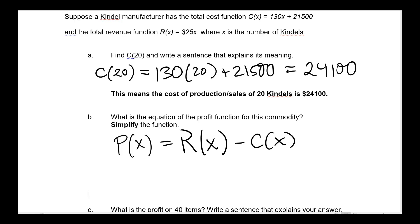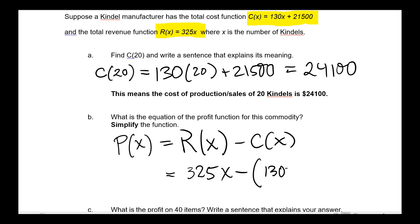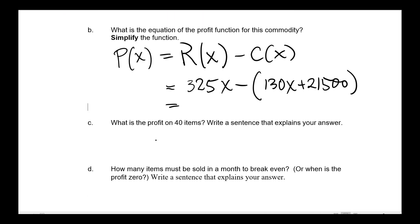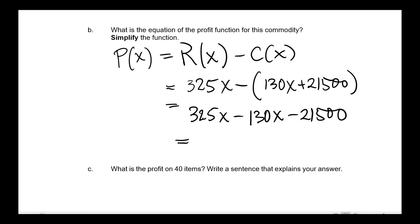So in this case, we take the revenue and subtract the cost. That gives us 325x minus, and we need parentheses because the cost involves two terms: 130x + 21,500. Distributing the negative, 325 minus 130 equals 195, which is the profit per unit, and then we subtract the fixed cost of $21,500. So the profit function is P(x) = 195x − 21,500.